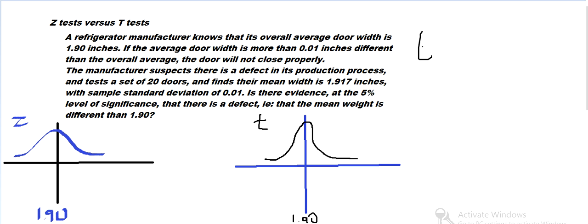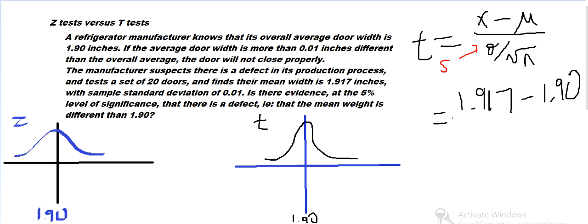So now we can carry out a test then. We know we're using the t. And the t-value is going to be the sample mean minus the overall mean over the sample standard deviation. We're going to scale it down. You might see this marked as s for sample standard deviation. So in this case, that's 1.917 minus the mean, or the overall mean is 1.90.